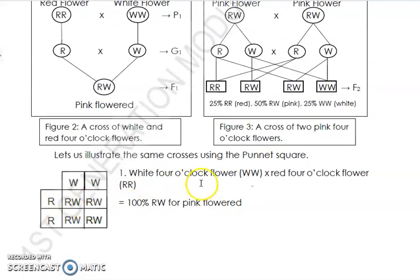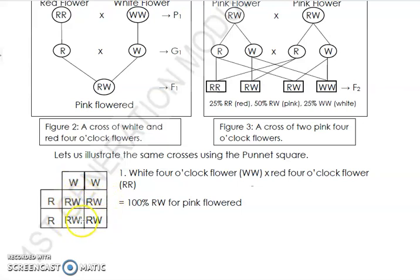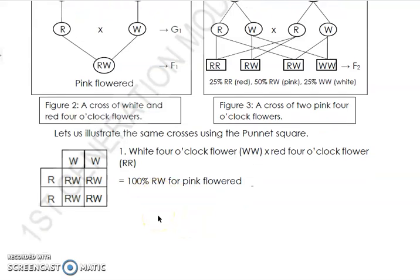Let's do the Punnett square. Problem: white four o'clock flower (WW) crossed with red four o'clock flower (RR). Write the parents: WW for white, RR for red. Combine: R×W = RW, and so on. When you look at the four offspring, all are RW. Since RW means pink, 100% of the offspring are pink — all four out of four are pink.